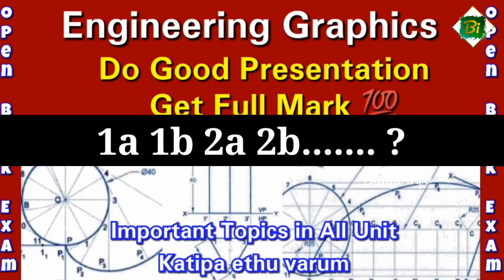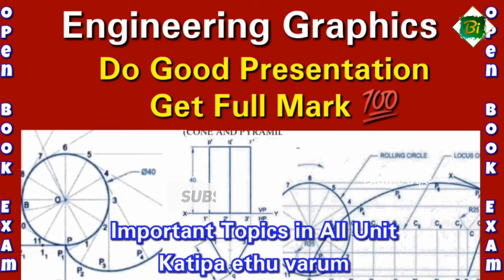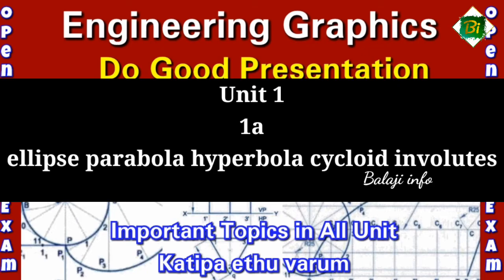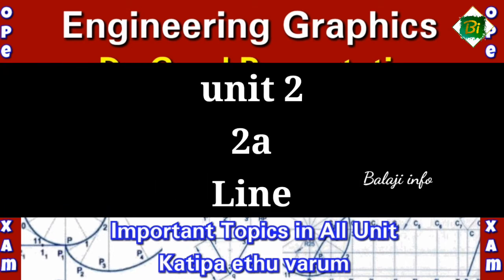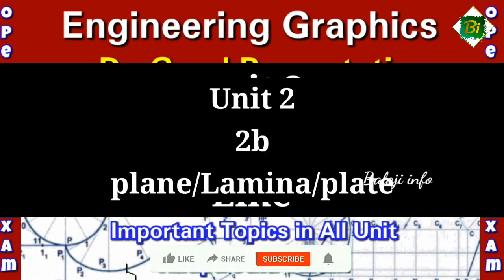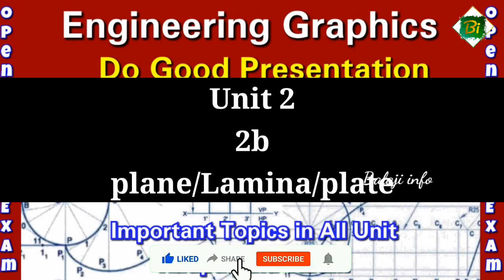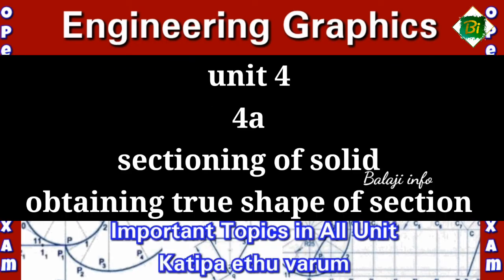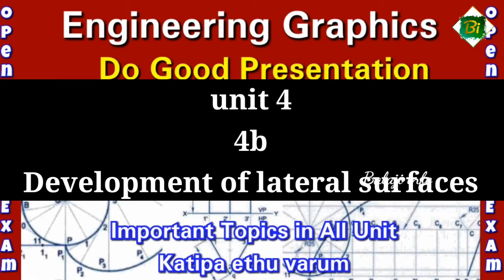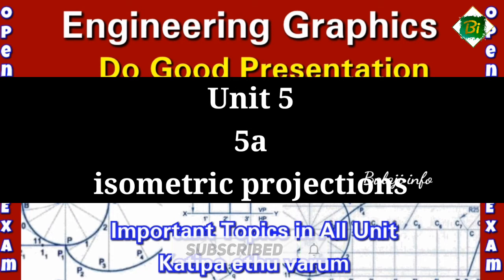Now, what are the questions on the topics? For Unit 1, the topics are: Ellipse, Parabola, Hyperbola, and Cycloid. Unit 1B is freehand sketching. Unit 2A is naming the lines. Unit 2B covers planar plate sums. Unit 3A and 3B cover primer projections. Unit 4A is covered next, and Unit 4B is sectioning of solids and obtaining the true shape of a section. Unit 5A is development of lateral surface. Unit 5B is isometric projection. Perspective projection questions are also included.